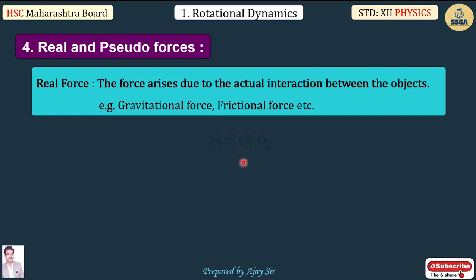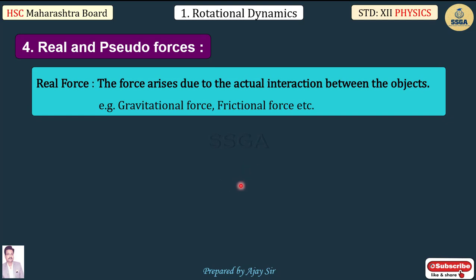For gravitational force: a ball thrown upward returns to Earth due to gravity. Gravitational force is the force of attraction between all objects in the universe, given by F = GMm/r². This interaction is real, so it is called a real force.